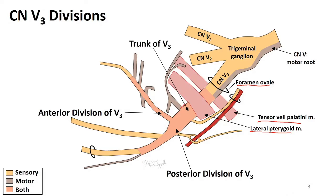V3 has three parts: first is the trunk, or main trunk of V3, with branches coming off of it. Up here we see the anterior division, and then finally the posterior division. On this illustration, anything in yellow is sensory only, motor is shown in brown, and anything containing both is shown in orange.